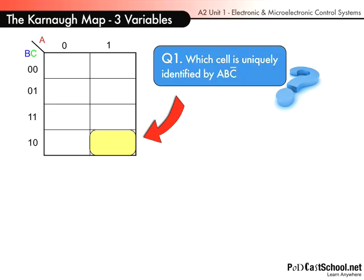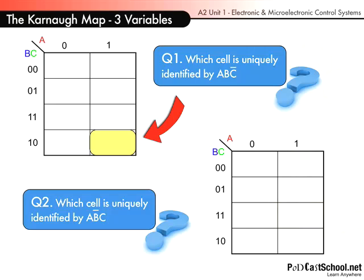Here's another one. Which cell is uniquely identified this time by A, B bar, and C? Okay. A must be a 1 again. So it must be again in the right-hand column. B bar this time, so it must be B must be a 0. So it must be in one of the top two cells in the right-hand column, because B is a 0 in those cells.